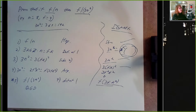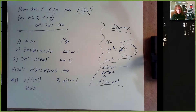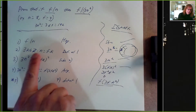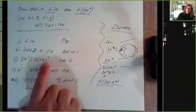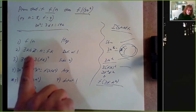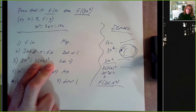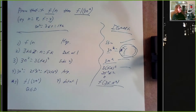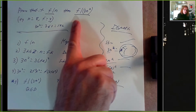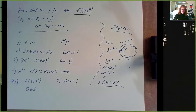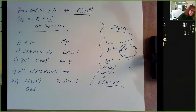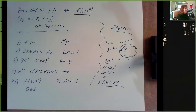Most divisibility proofs will look and feel pretty much like this. You'll be told something divides something else, and you'll use the definition of divisibility to say that something else is an integer multiple. If you have more than one of these, don't use the same k — call it k1, k2, or k and j. Then you substitute and try to get to your conclusion, which is usually a statement about divisibility: showing something can be written as a multiple of something else.